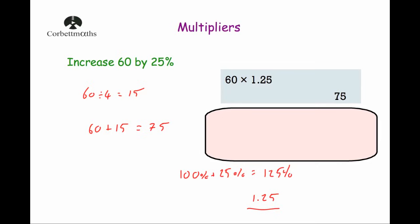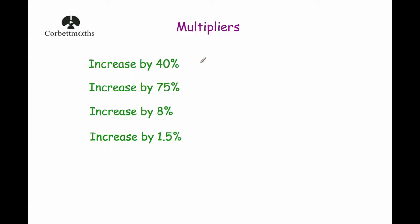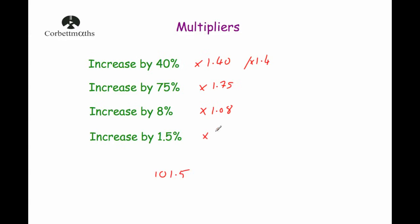Let's look at multipliers for other increases. Increasing by 40%: 100% plus 40% is 140%, so the multiplier is 1.4. Increasing by 75%: 100% plus 75% is 175%, so the multiplier is 1.75. Increasing by 8%: 100% plus 8% is 108%, so the multiplier is 1.08. And increasing by 1.5%: 100% plus 1.5% is 101.5%, so the multiplier is 1.015.